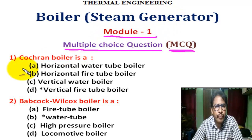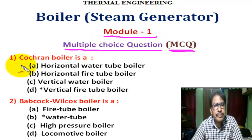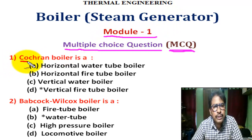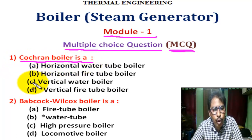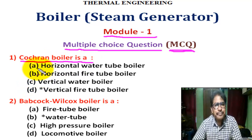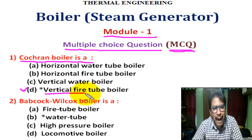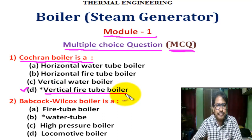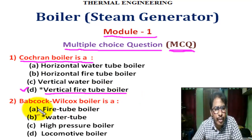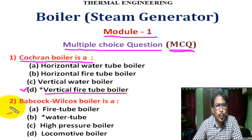Question number 1: Cochran boiler is a — there are four options. Correct answer is D. Cochran boiler is a vertical fire tube boiler.